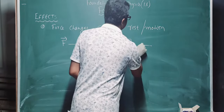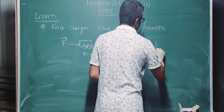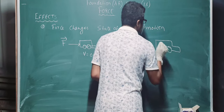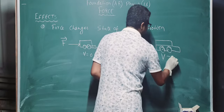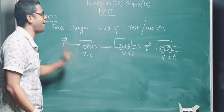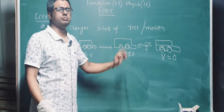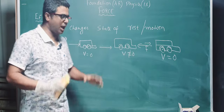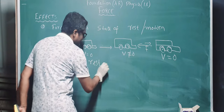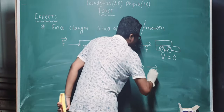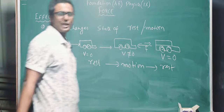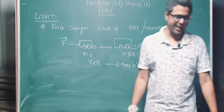Now it is moving. I apply some force. What happens after some time? The velocity becomes 0 again. I pushed it, made it move, then I stopped it. Again I have caused disturbance — state of rest to state of motion, to state of rest again.